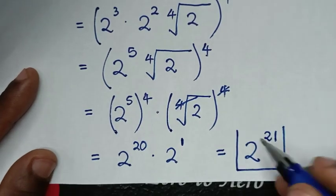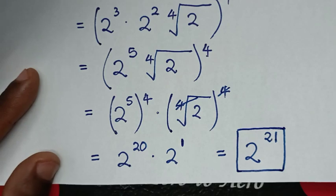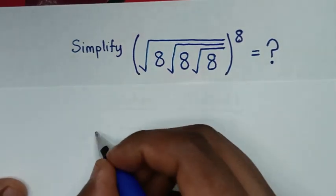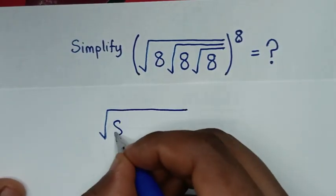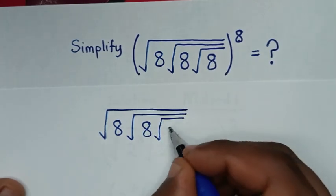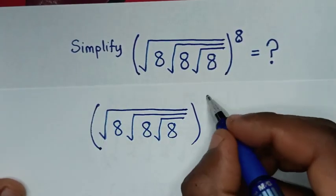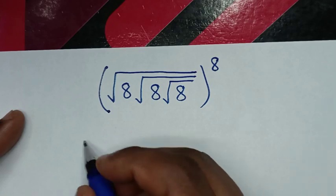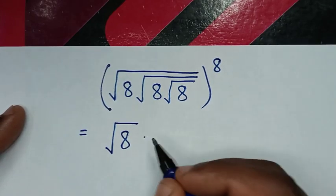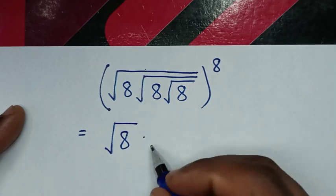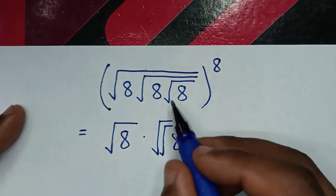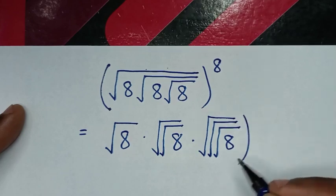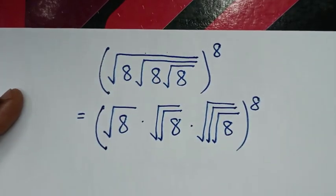So our final answer is 2 power of 21. To solve using another method, this is the second method. Let's write our problem: square root of 8, under a square root of 8, under a square root of 8, bracket power of 8. Now to solve this, this first 8 is under 1 square root, so here it will be equal to square root of 8, then times this 8, which is under 2 square roots, so square root of square root of 8, bracket power of 8.